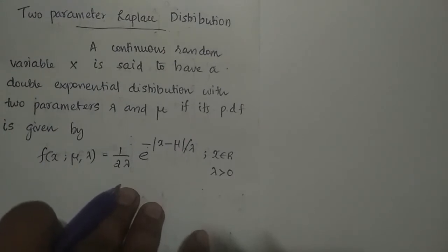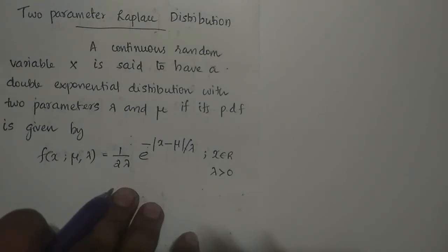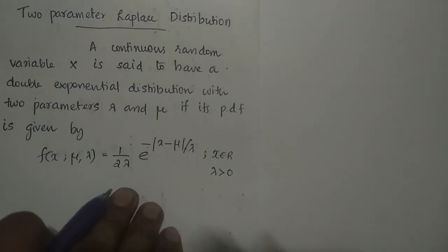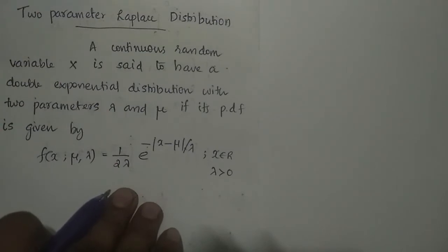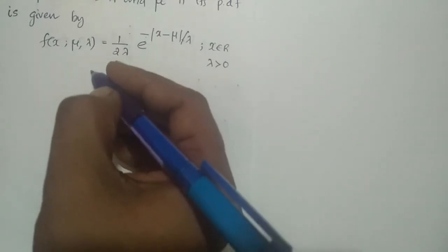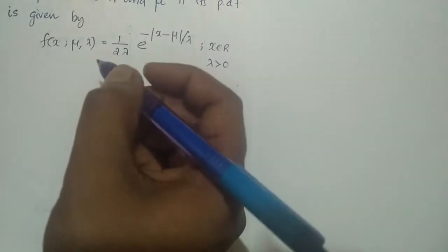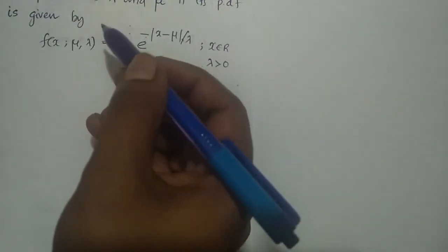Now we are going to discuss the two-parameter Laplace distribution. The definition is: a continuous random variable X is said to have a double exponential distribution with parameters λ and μ if its PDF is of the form f(x) = (1/(2λ)) e^(−|x − μ|/λ), where x belongs to the real numbers, λ > 0, and there is no restriction on μ.